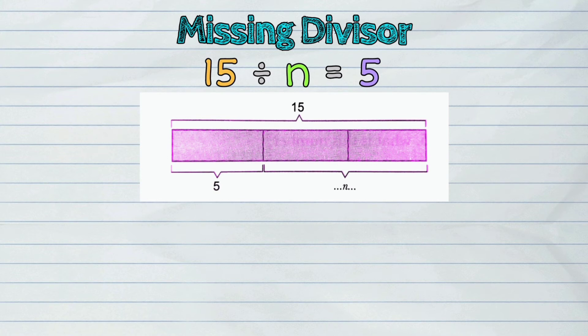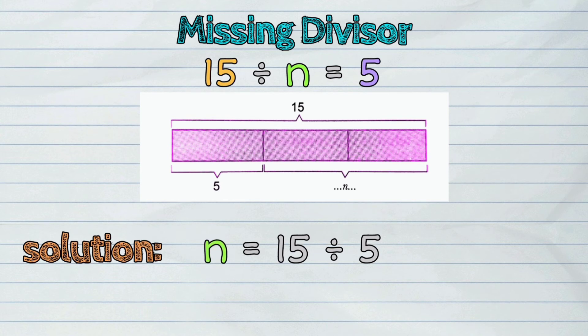Notice that n can be obtained by dividing the number 15 by the number 5. Here is the solution: n equals 15 divided by 5. The answer is 3.